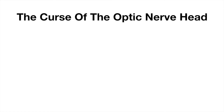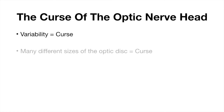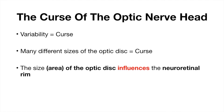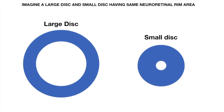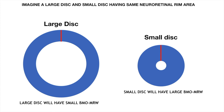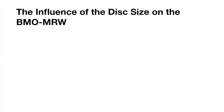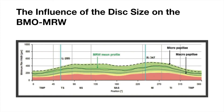The challenge of the optic nerve head is its variability, as many different sizes exist. The size of the optic disc influences the neuroretinal rim size. Consider a large disc and a small disc having the same neuroretinal rim area: the large disc will still have a small BMO-MRW and the small disc will still have a large BMO-MRW. The influence of disc size on BMO-MRW should be kept in mind during interpretation.